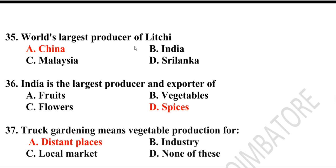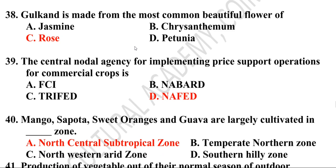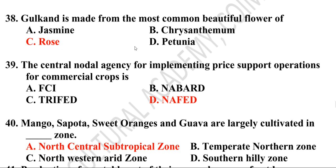Thirty-fifth question: World's largest producer of litchi is China. Thirty-sixth question: India is the largest producer and exporter of spices. Thirty-seventh question: Truck gardening means vegetable production for distant places. Thirty-eighth question: Gulkand is made from the common beautiful flower of rose. The central nodal agency for implementing price support operations for commercial flowers is the National Agricultural Cooperative Marketing Federation of India — NAFED.